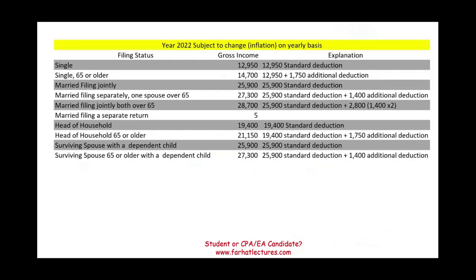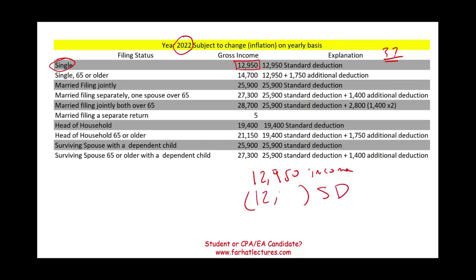Now let's take a look at actual numbers to make sense of all of this. For the sake of illustration, I'm going to be using the year 2022, but remember these figures could be different in 2023 or 2024 — the rules are the same. For example, for a single filer, if your gross income exceeds $12,950, you must file. Here's why: if you made $12,950, the government gives you a standard deduction of $12,950, which wipes out your income. Think of it as a standard deduction that everyone gets if they're single.